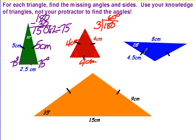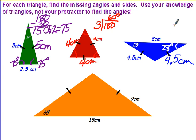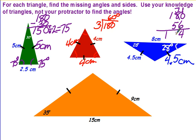In this triangle, the sides are marked the same, so it must be isosceles. So if that one is 4.5 centimeters, this one is also 4.5 centimeters. If this angle is 28 degrees, then we know that this one over here also has to be 28 degrees. 28 plus 28 is 56 degrees. Subtract that from 180, and the missing angle is 124 degrees.